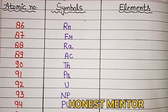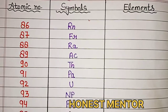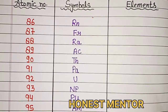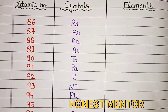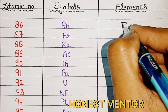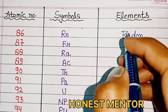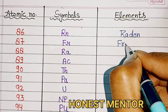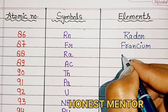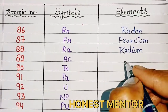Hello everyone, welcome to my channel. In today's video we are going to see atomic number, symbols, and elements 86 to 114. Let's start. Atomic number 86, symbol Rn, element Radon. 87, Fr, Francium. 88, Ra, Radium. 89, Ac, Actinium.